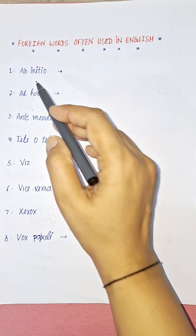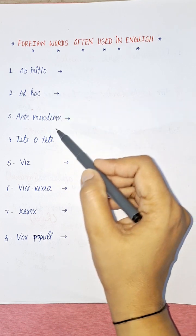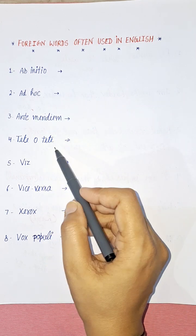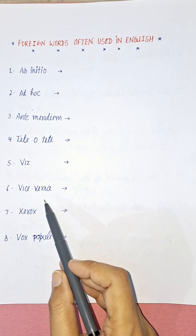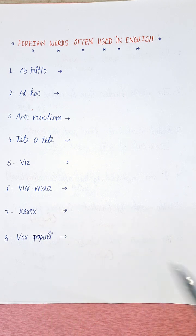Today we have: ab initio, ad hoc, ante meridiem, tête-à-tête, viz., vice versa, xerox, and vox populi — some foreign words which we generally use in our English.